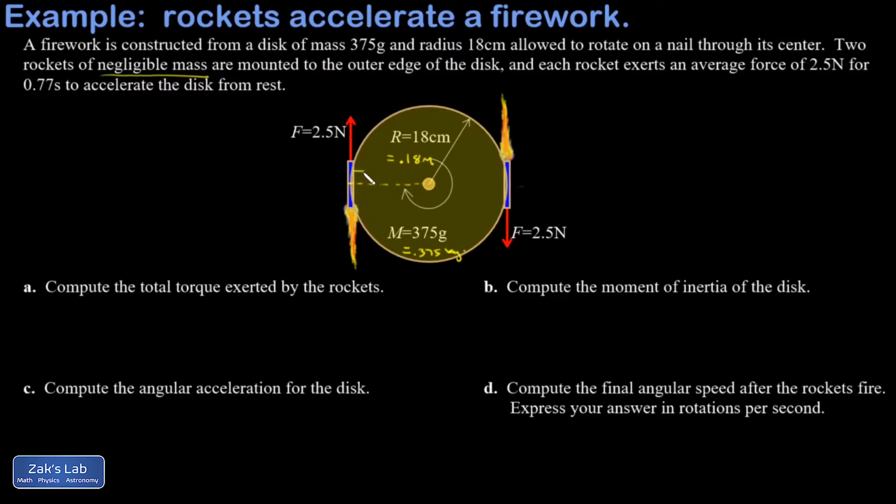The nice thing about how I arrange them is that that force is already perpendicular to the lever arm, which simplifies our torque formula. I'm given the magnitude of those forces as 2.5 newtons and then a total time that the disc accelerates before the rockets burn out.